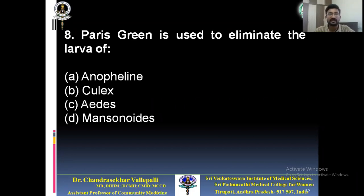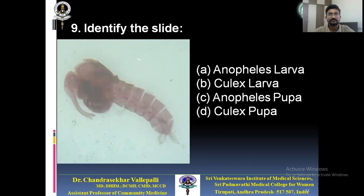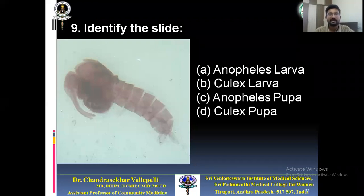Ninth question — identify this slide: A) Anopheles larvae, B) Culex larvae, C) Anopheles pupa, D) Culex pupa. First confirm whether it is larvae or pupa. Many are opting for Anopheles larvae. You can also see a siphon tube in this picture — we will clarify this during the lecture.